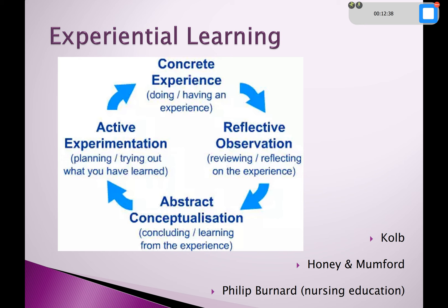You'll then think about how you can do things better — this is abstract conceptualization, which involves looking at theories and understanding why things happen the way they do. You can also use that stage to think about what you'd do differently next time as a facilitator. Active experimentation is taking those thoughts and putting them into practice to see how it works out. Kolb's idea is that we have to go through all four stages to get the most out of learning.